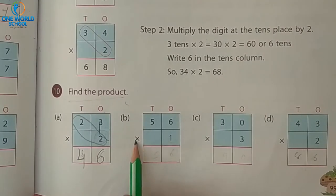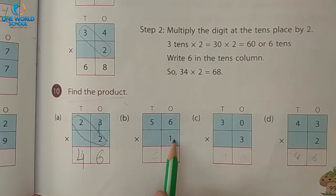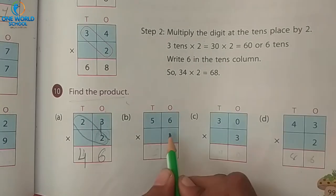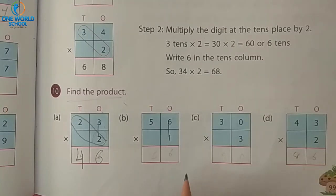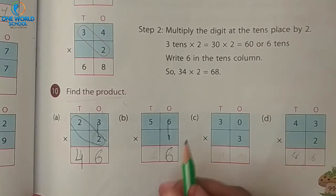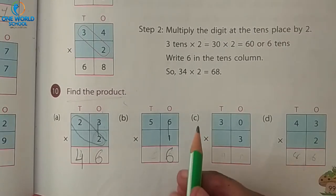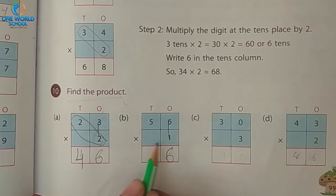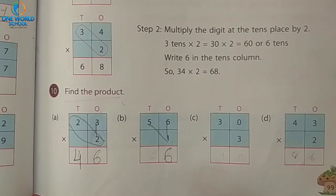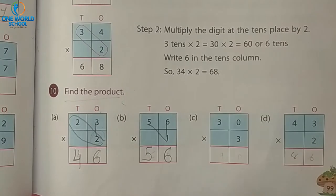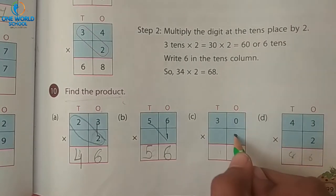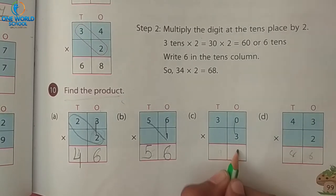Again: fifty-six multiply by one. So first, we multiply with ones — one six is six. Write it at the ones place because we are multiplying with ones. And one five is five. Number C: three zeros are zero, and three threes are nine.